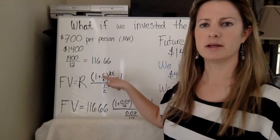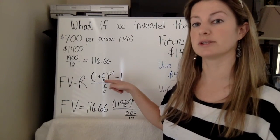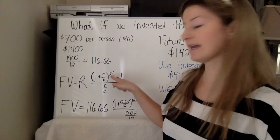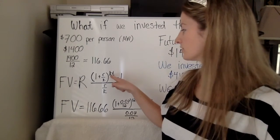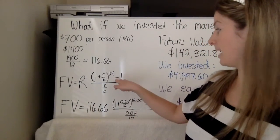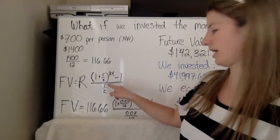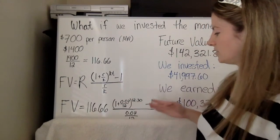So our big R is going to be the amount you're investing per month or per period. In this case, we're doing monthly. Our little r is the interest rate, the annual interest rate, and then divided by K, it's the number of times it's compounded. So let's pretend we're investing this $116.66 monthly at 7% annually compounded monthly, and we're going to do it for 30 years.